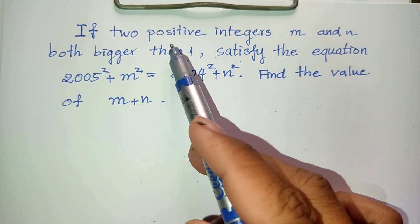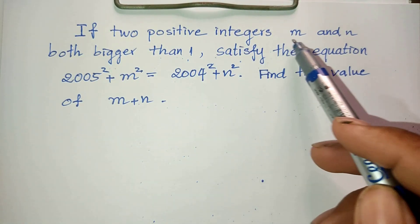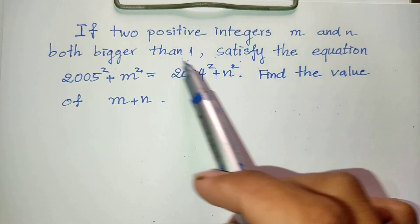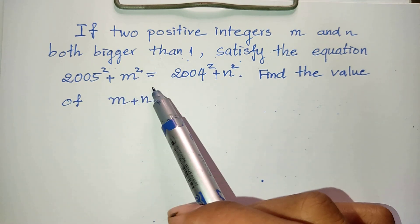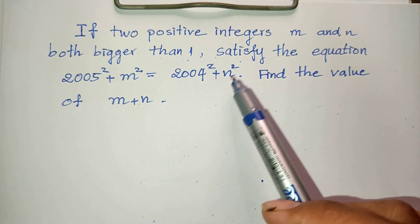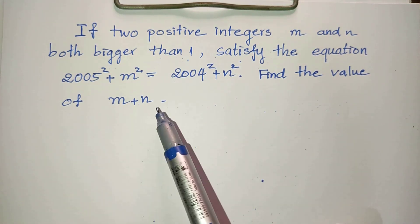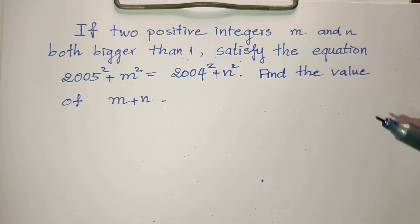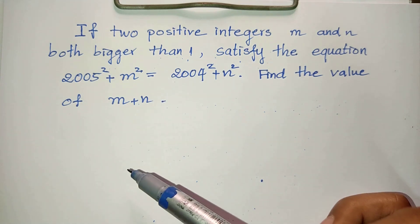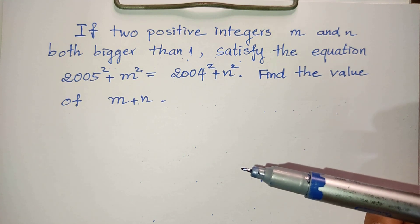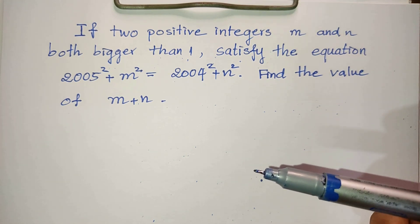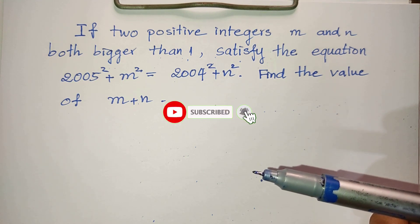If two positive integers m and n are both bigger than one, and satisfy this equation: 2·cos²(5°) + m² = 4·cos²(4°) + n², find the values of m plus n. Hello everyone, welcome to my YouTube channel. Today I have this equation. If you know how to solve it, please come back to watch my video from beginning to the end to verify your solution. Before we go to the solution, please don't forget to subscribe to my channel for more exciting videos.